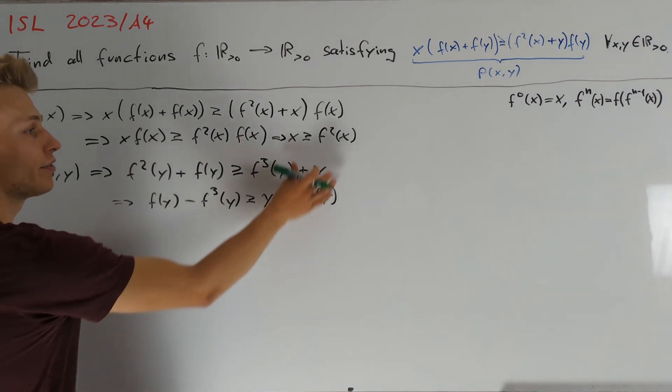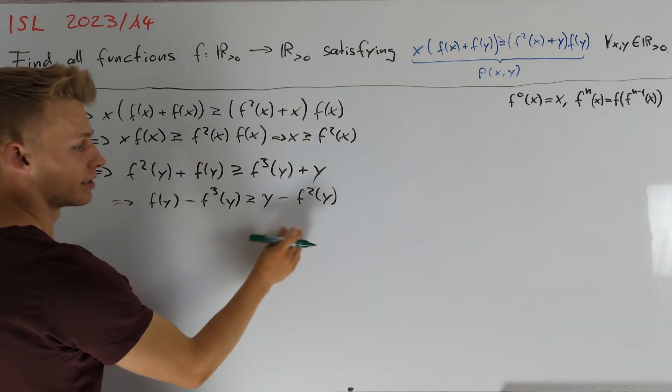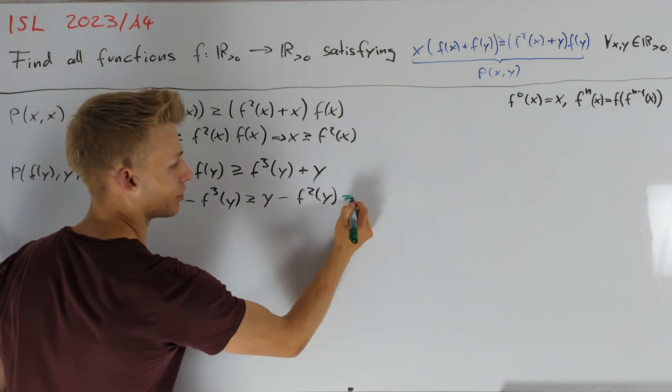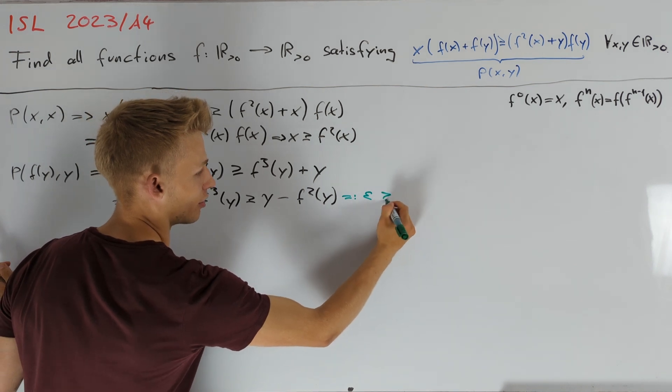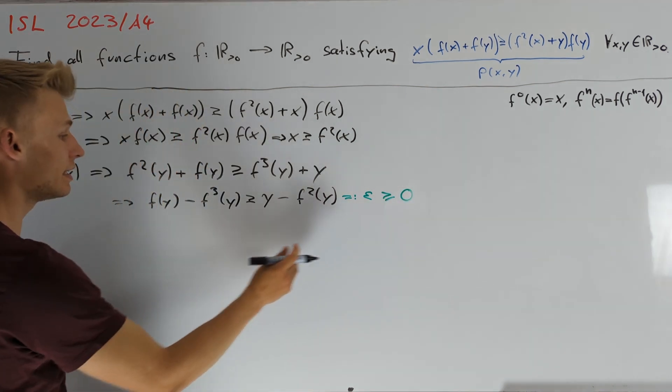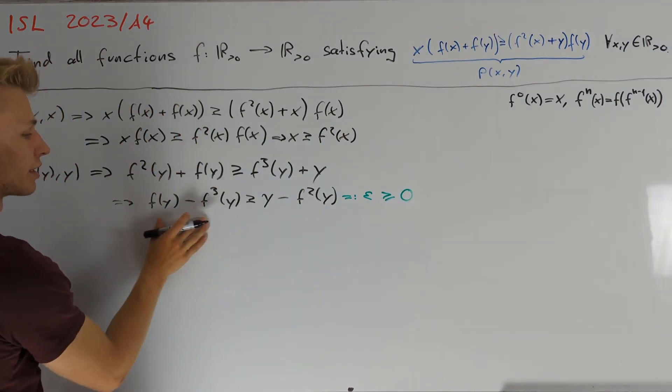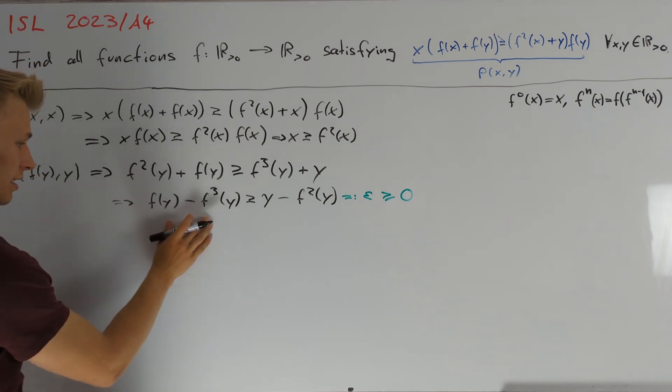We get that f(y) minus f³(y) is greater than or equal to y minus f²(y). By our previous inequality here, we know that this term, which I want to denote by epsilon, is greater or equal to 0. We see that we applied f one more time on each term on the left hand side.